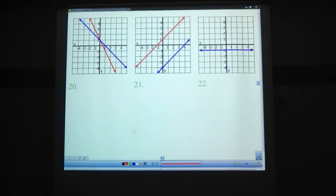And we're back. Number 20, because they cross at one point, is one solution. 21, they cross at no points, so there are no solutions. And 22, they cross at all points, so it's infinitely many solutions.